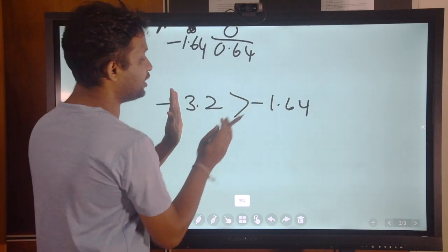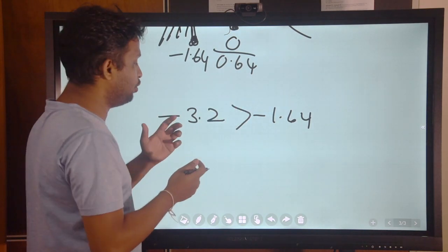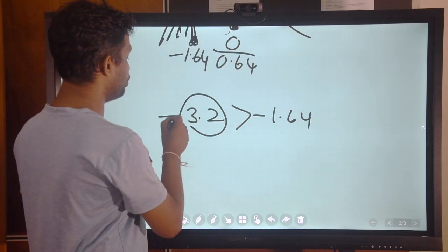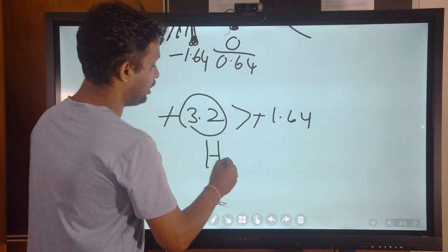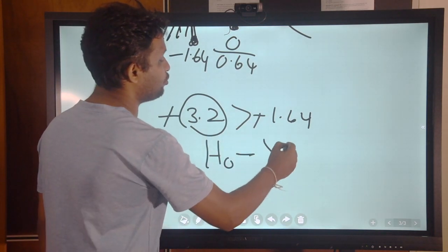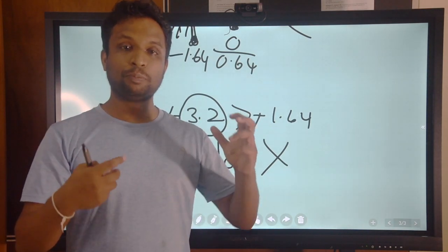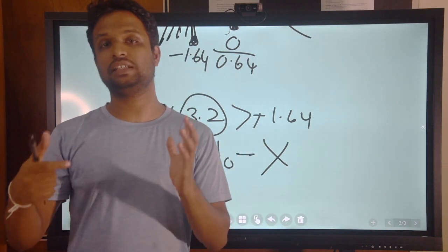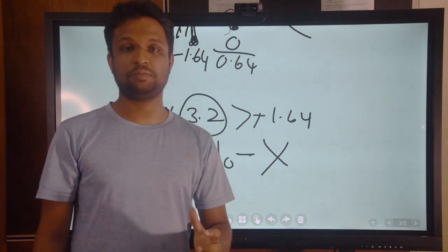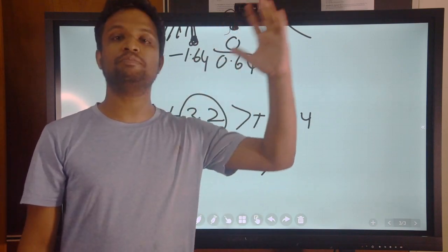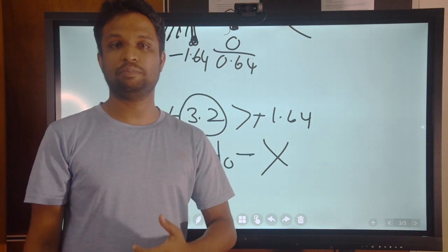But here we are interested in minus 3.2, whether it is high or low. So 3.2 is high. So you have to forget this value because both are minus values. Because of that, we can't retain our null hypothesis. So null hypothesis should be rejected. We can accept the hypothesis that our interested population, the proportion of healthy people is significantly higher than the standard population, or the proportion of diseased people are significantly less in comparison to the standard population.